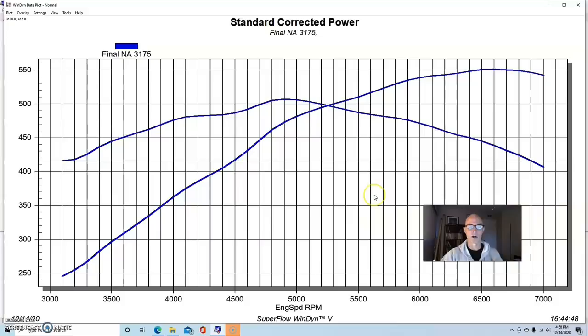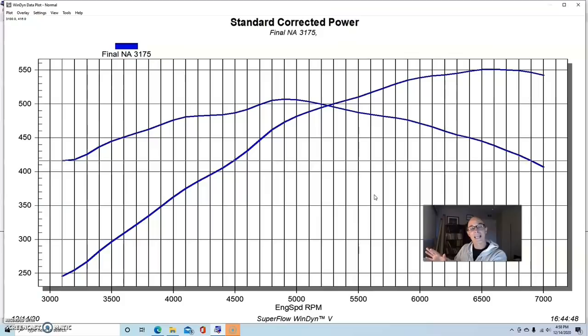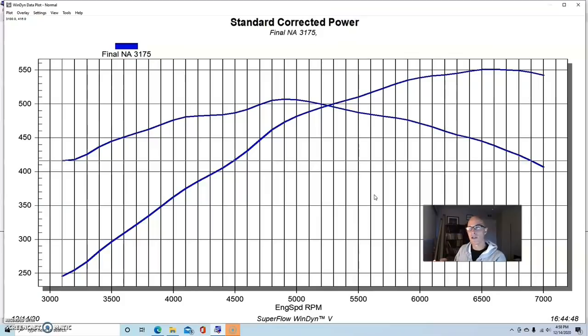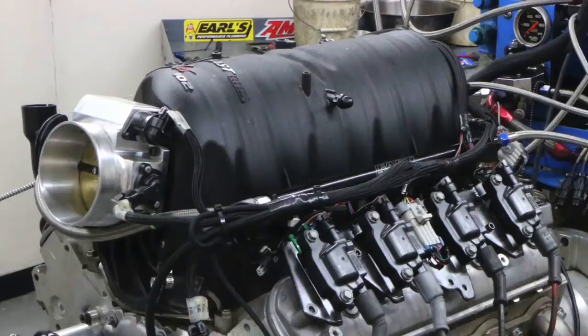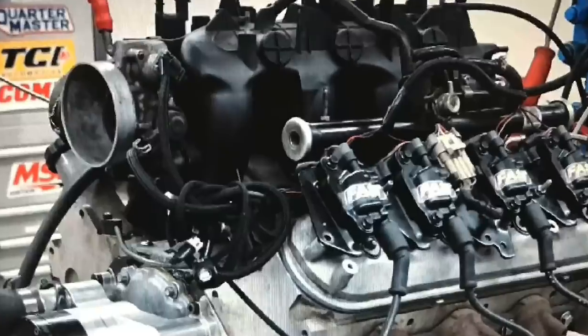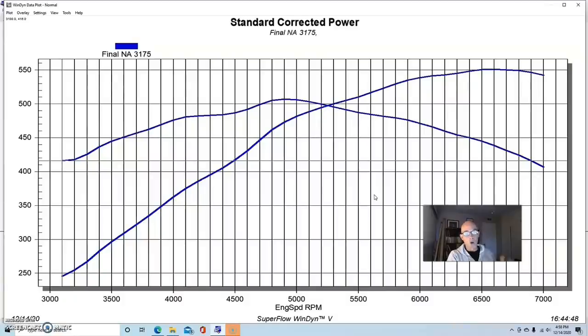We had a factory LS3 intake manifold on it when we ran the cathedral port stuff and a fast LSXRT when we ran the 317 heads. And I know everyone's going to get all up in arms. Well, why did you use a fast intake on the 317 heads and use a stock LS3 on the rec port heads? And here's my answer. If you were to compare independently, if you were to compare a factory LS3 intake to a fast LS3 intake on this kind of combination, there'd be no difference in power. The fast doesn't offer any gain really over a factory LS3. On a cathedral port application, the fast intake does offer a gain.